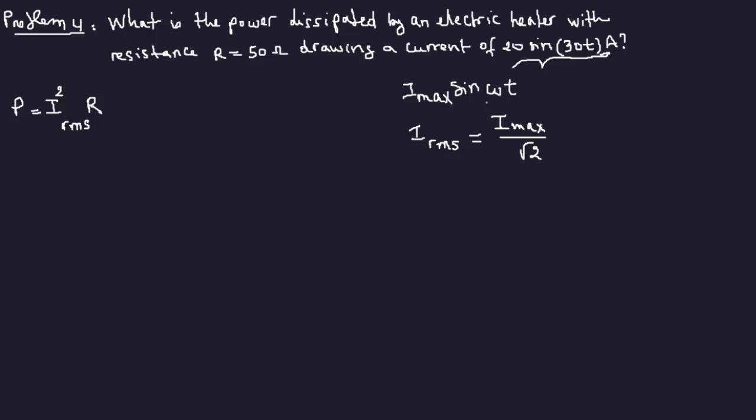Okay, so I, our I_max here in this particular number given is 20. So I_RMS is 20 over square root of 2. And so we can go ahead and plug that in here. So P is equal to 20 squared over 2 times 50.